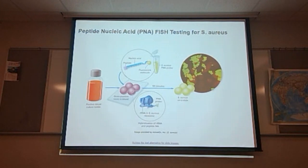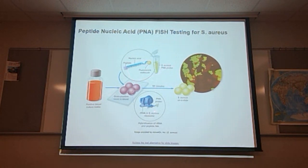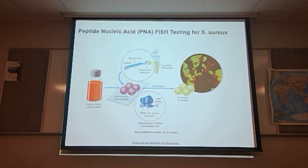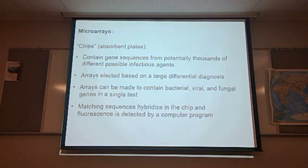Peptide nucleic acid fishing: here Staph aureus is found on the slide. Starting with a bacterial culture laid out on the slide, the DNA probe for Staph aureus is applied along with Staph aureus ribosomes. If within 90 minutes glowing Staph aureus colonies appear, we know that the blood sample contains gram-positive cocci, and that gram-positive cocci is in fact Staph aureus.